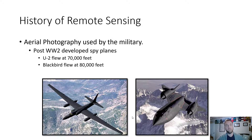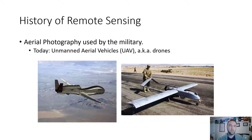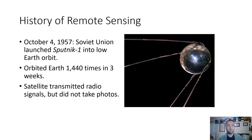Over the course of the 20th century, aerial imagery for military application continued to advance. The U-2 planes famously flew at over 70,000 feet; the Blackbird flew over 80,000 feet — these were essentially long-range reconnaissance vehicles for capturing remotely sensed photos from very high up. Military applications continued with drones during the 1990s and 2000s in the Middle East. In 1957, the Soviet Union launched Sputnik into low Earth orbit. It orbited the Earth 1,440 times in three weeks, and while no photos were taken, radio transmissions were made between the satellite and Earth.